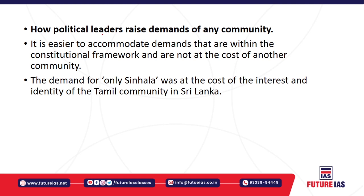The second determinant is how political leaders raise the demands of any community. Sometimes political leaders understand the limits set by the constitution and ask for demands which can be accommodated — well within constitutional limits and not at the cost of another community. For example, if a particular community wants to dominate in a particular social sphere, that goes against the cardinal principles of the constitution, where every society has equal standing in the country.